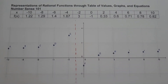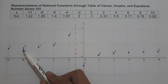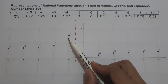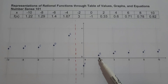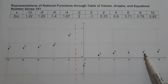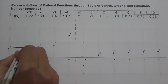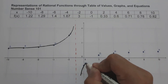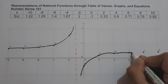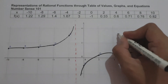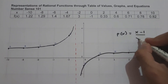If we plot the given set of points: (−10, 1.22), (−8, 1.29), (−6, 1.4), (−4, 1.67), (−2, 3), (0, −1), (2, 0.33), (4, 0.6), (6, 0.71), (8, 0.78), and (10, 0.82). Connecting the points from A, B, C, D, E — extending — and then F, G, H, I, J, and K. By connecting the points, we get the graph of f(x) = (x − 1) over (x + 1).